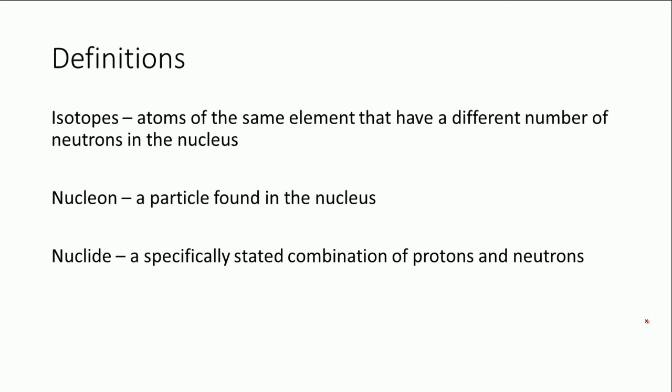Those are some of the numbers. Here are some definitions for atoms and nuclei. Isotopes—I'm sure you've heard of before from GCSE or maybe from chemistry. Isotopes are atoms of the same element. The reason that isotopes differ is because they have a different number of neutrons in the nucleus. The proton number is the same because they're the same element, but the number of neutrons can differ, and that makes two atoms with the same number of protons but different numbers of neutrons isotopes of that element, i.e., it has a different mass number.